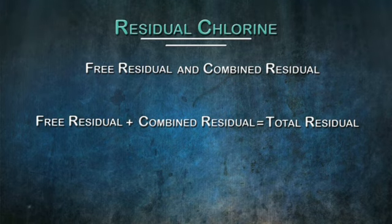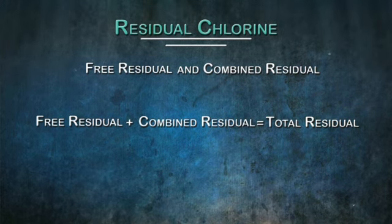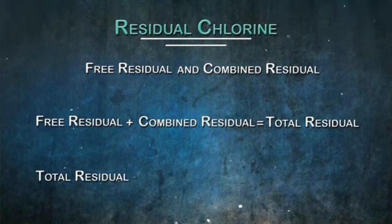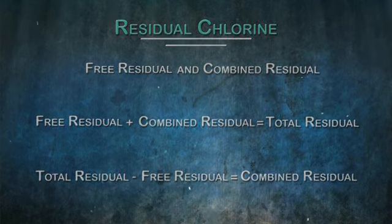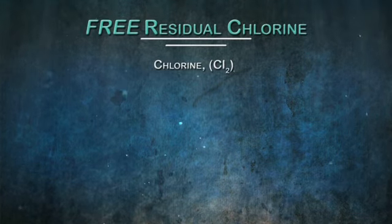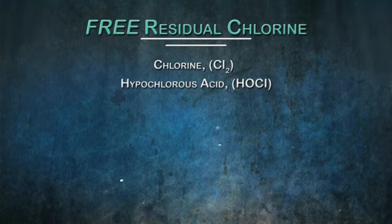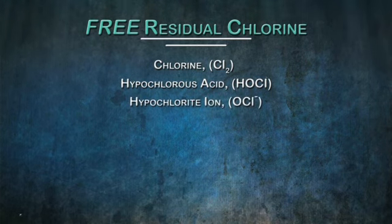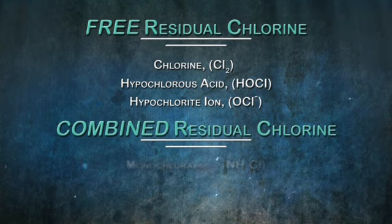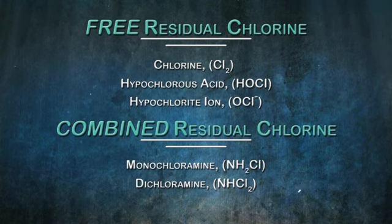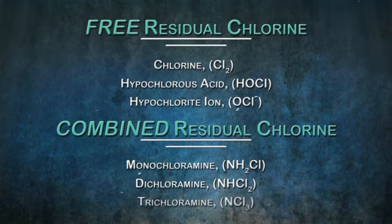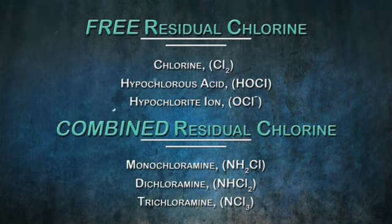The free and total residual chlorine can be measured using various test methods. To obtain the combined residual, free is subtracted from total. Free residual chlorine refers to chlorine, hypochlorous acid (HOCl), and the hypochlorite ion. Combined residual chlorine generally refers to the chlorine ammonia compounds of monochloramine (NH2Cl), dichloramine, and trichloramine, or nitrogen trichloride.